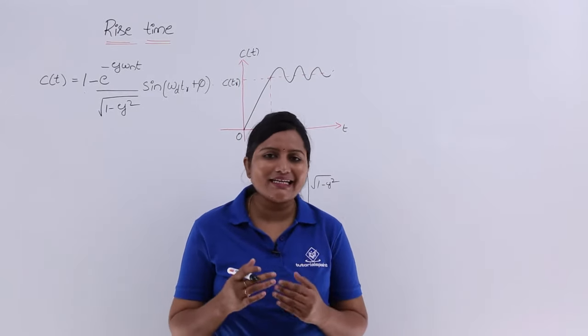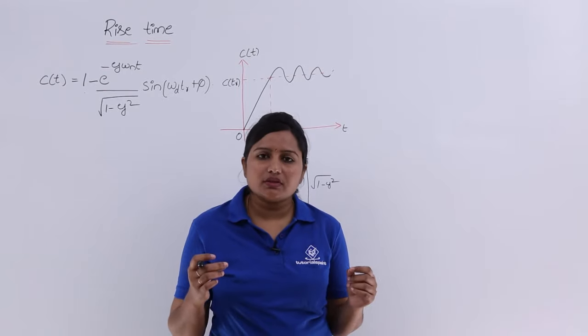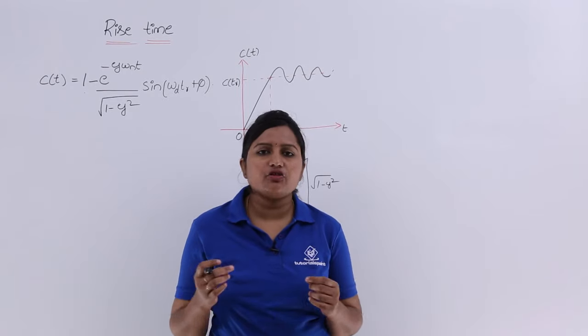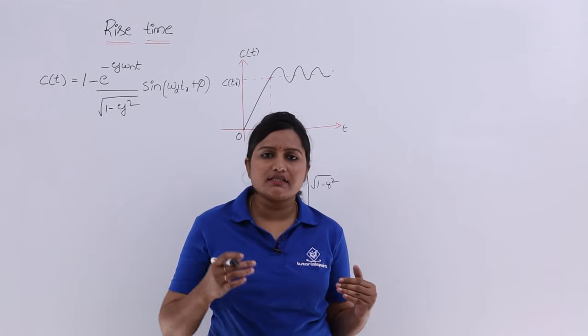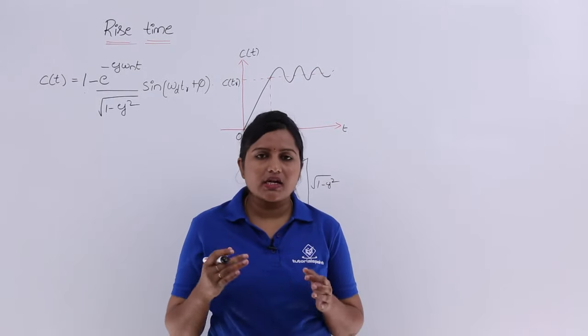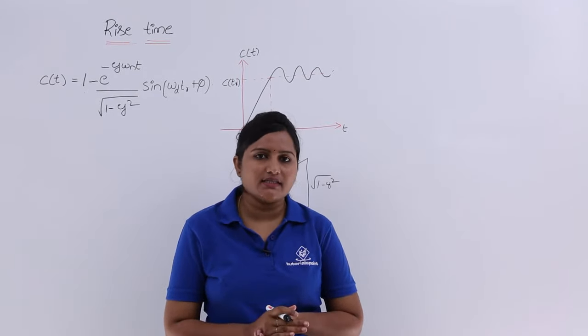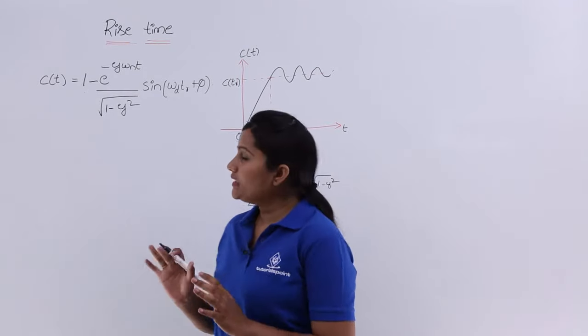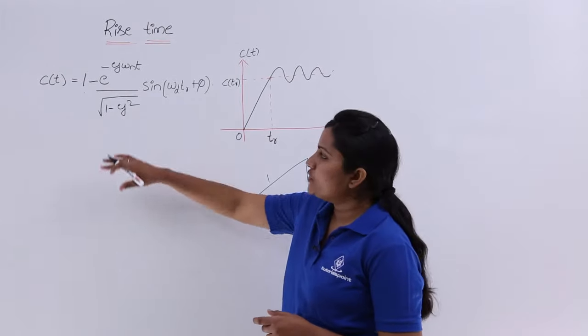If that is a critically damped system, the rise time we need to calculate from 5 percent rise to 95 percent rise. Like that we need to consider about rise time. Here I am going to consider the under-damped system.